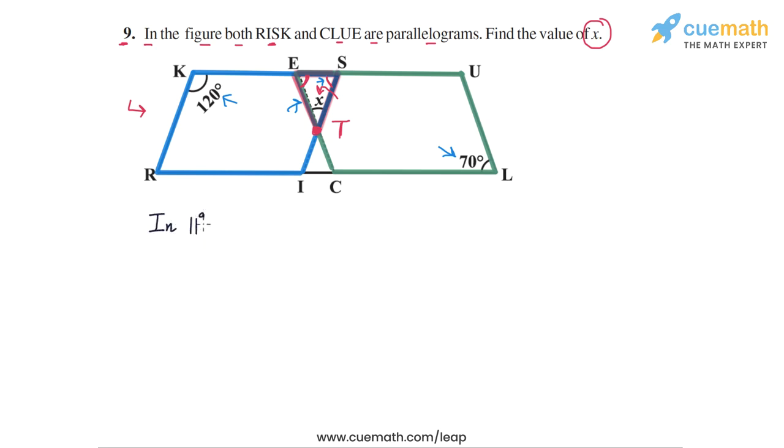In parallelogram CLUE, we can see that the angle at E, which I can write as angle SET, this angle here, is equal to the angle at L, which is 70 degrees. This is because these are opposite angles in a parallelogram.